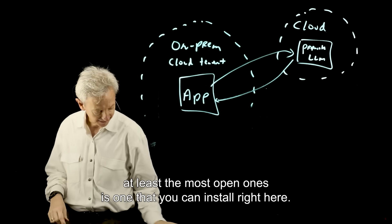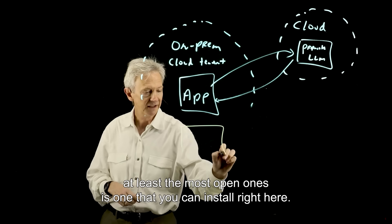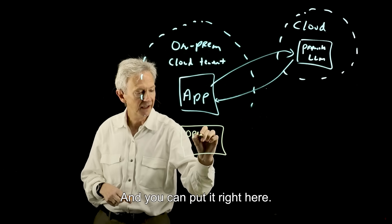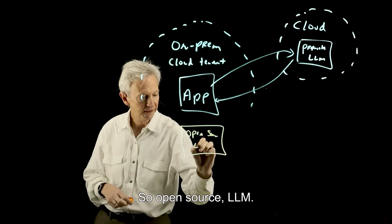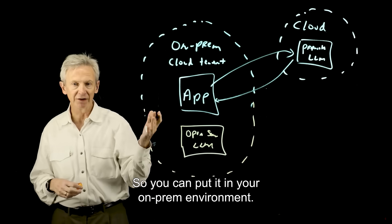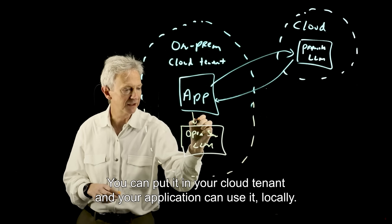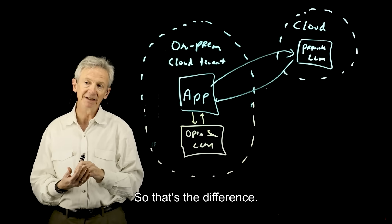Now an open source model, at least the most open ones, is one that you can install right here. You can download it and you can put it right here, an open source LLM. So you can put it in your on-prem environment, you can put it in your cloud tenant, and your application can use it locally. So that's the difference.